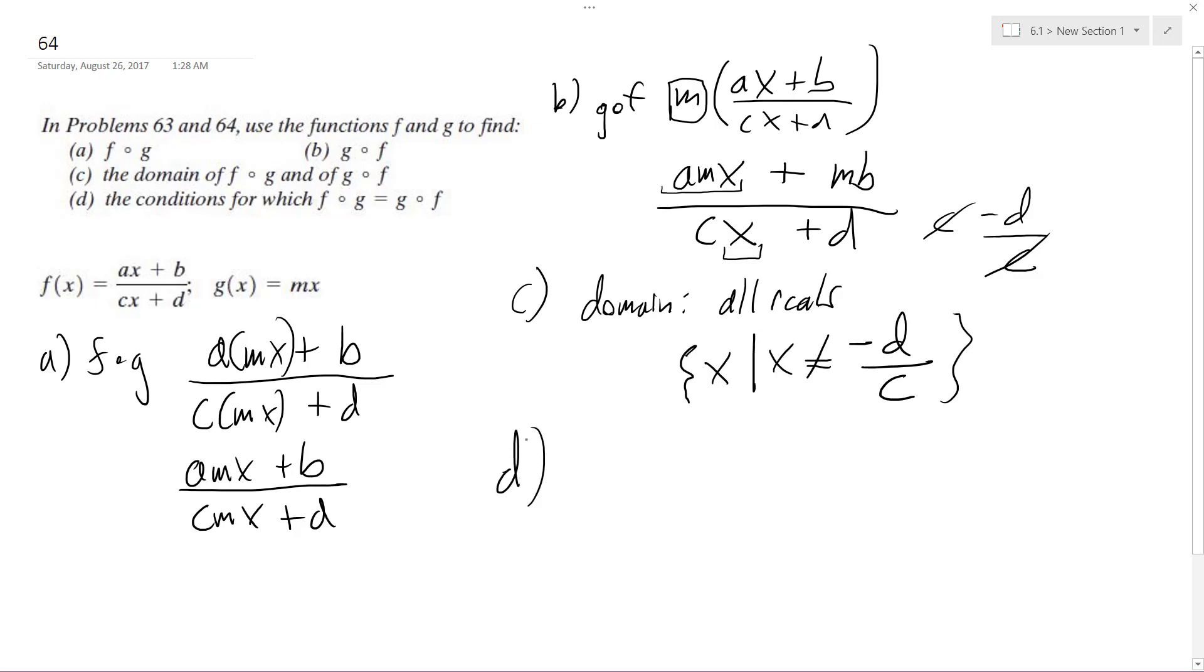What condition does f of g equal g of f? Yikes. So when does amx plus b over cmx plus d equal amx plus mb over cx plus d? This is a bit tricky. There's a couple ways you can do this, but probably the easiest one is to look at common terms. I would say if m is made to be equal to one, if m equals one, then f of g equals g of f.